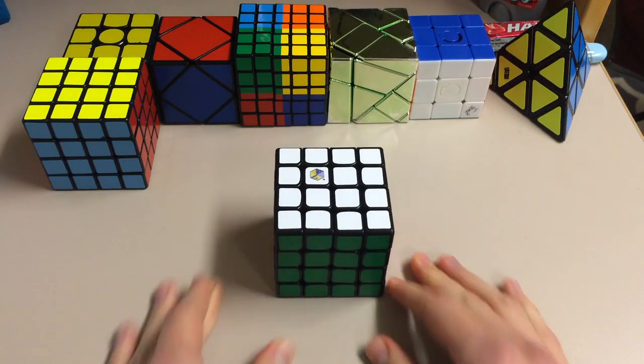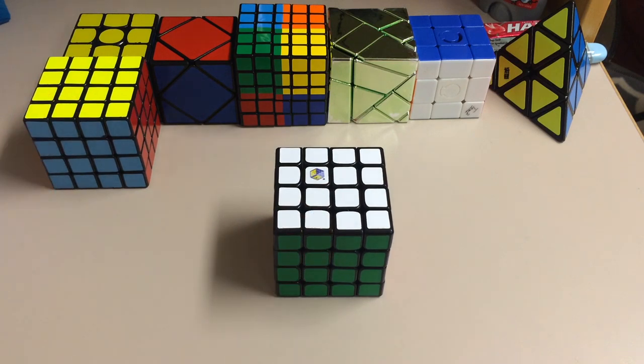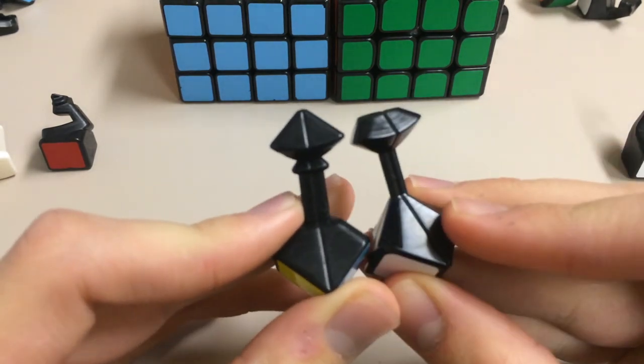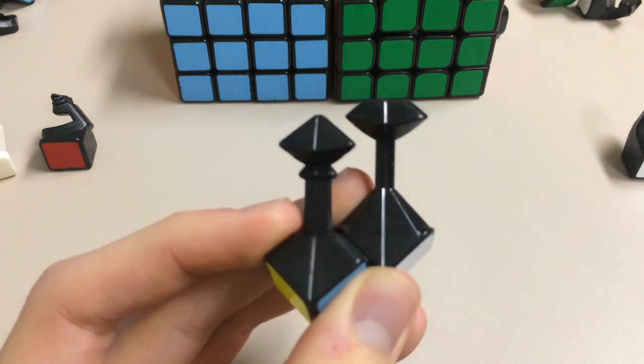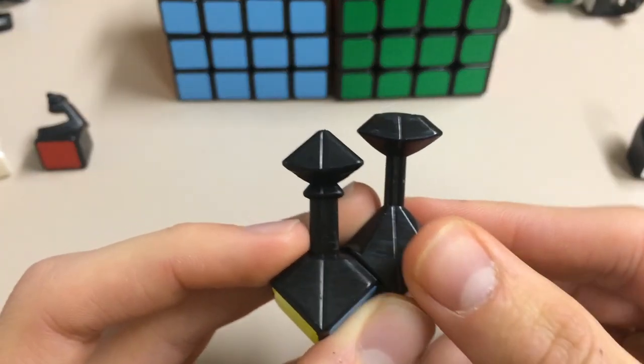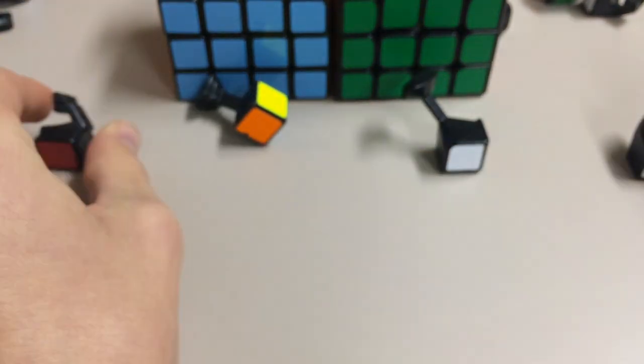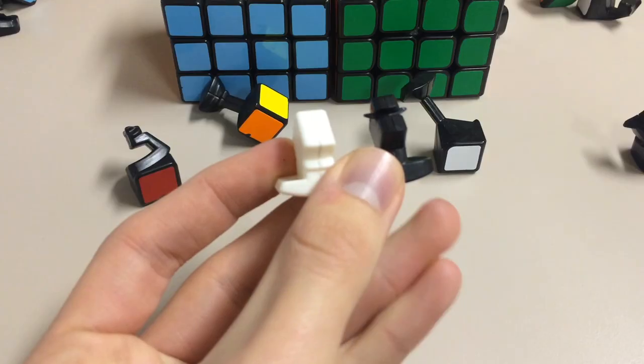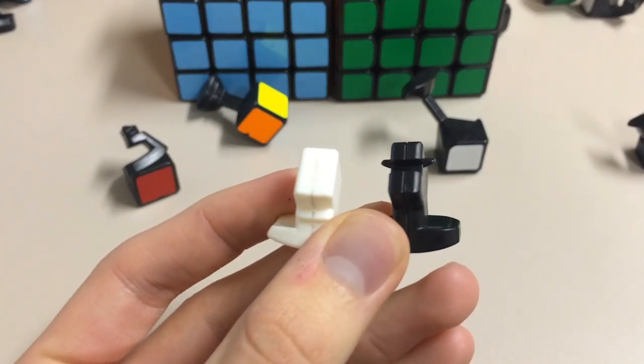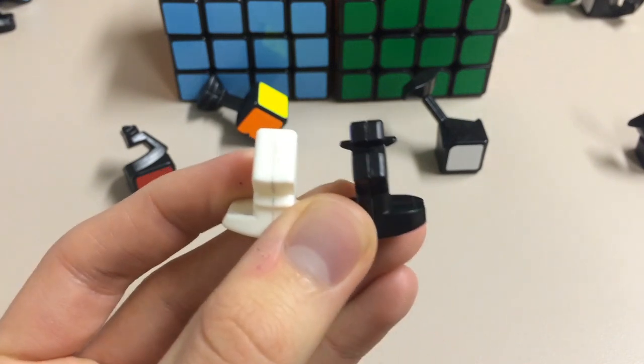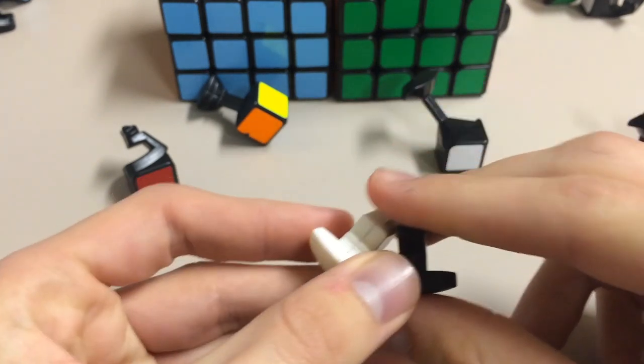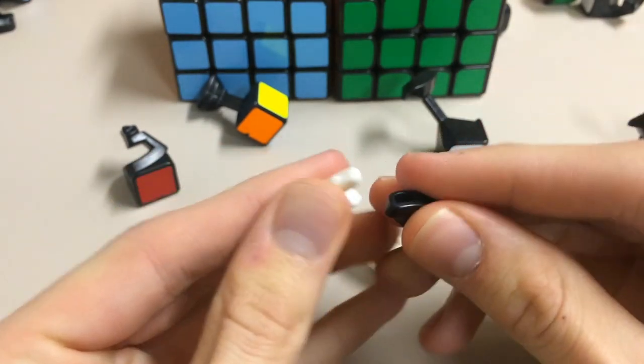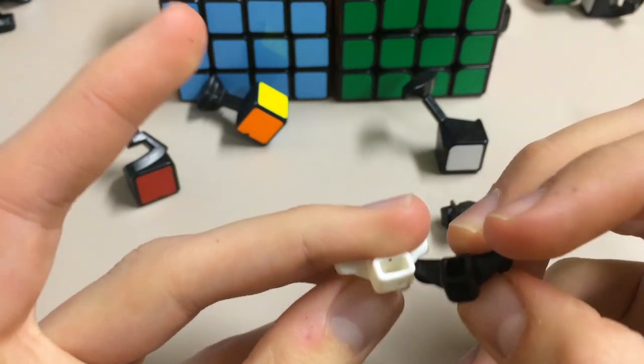But let's go ahead and take a look at the mechanism of this and compare it to that of the Aosu. Alright, so on the left we have the Aosu pieces, and on the right we have the Yushin 4x4 pieces. Here are the corners. So you can see the differences between them. Then for the edges, those are the edges. So for the internal pieces, the Yushin 4x4 inner edge has this wing right here. And then the other internal piece is this right here. Not too big of a difference on this.